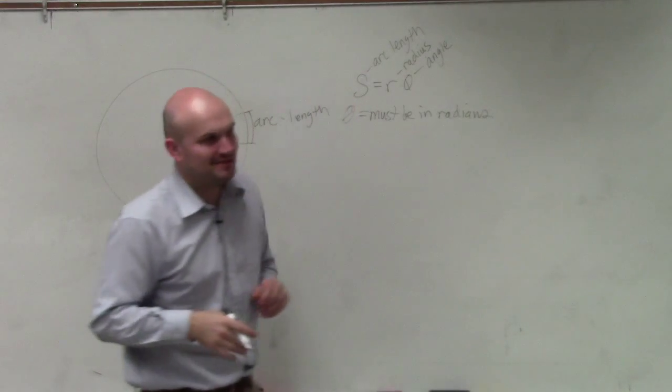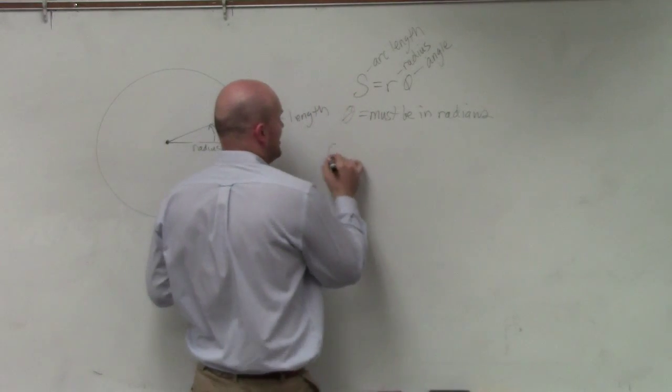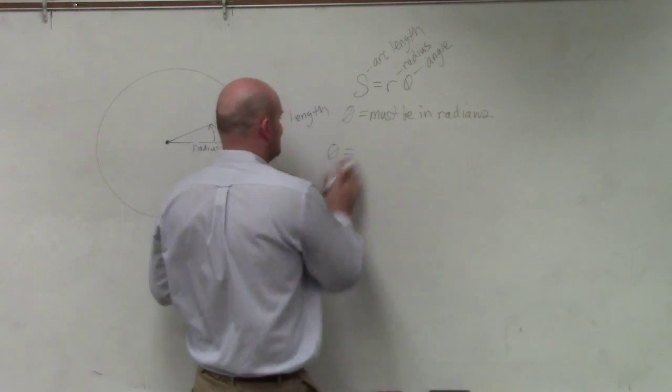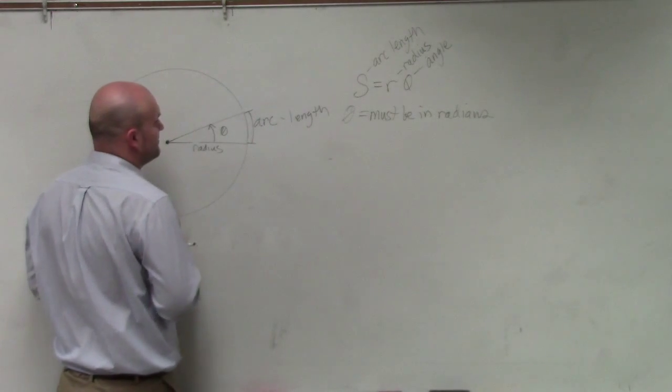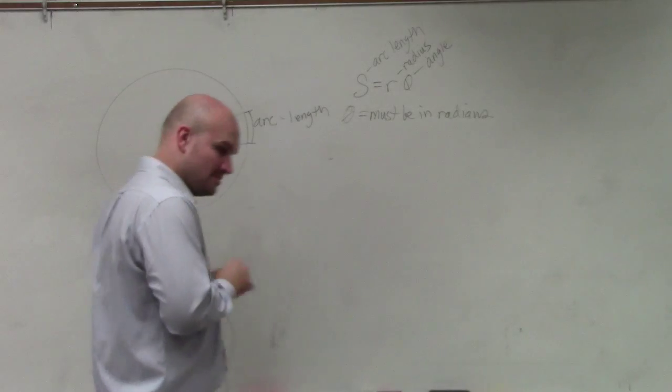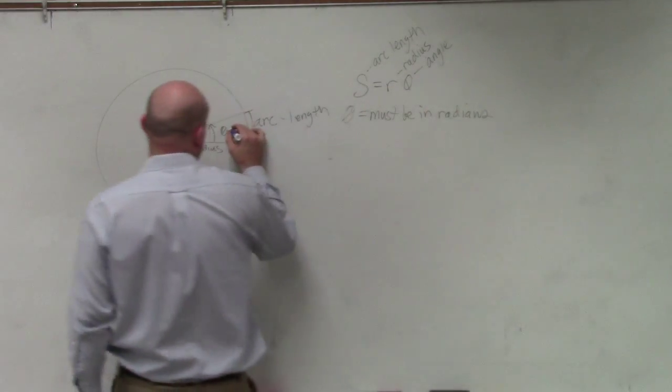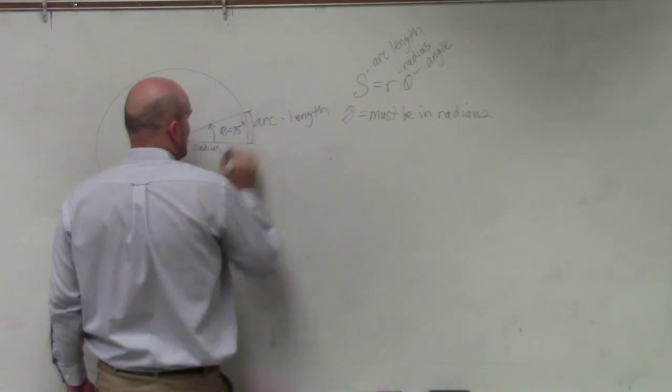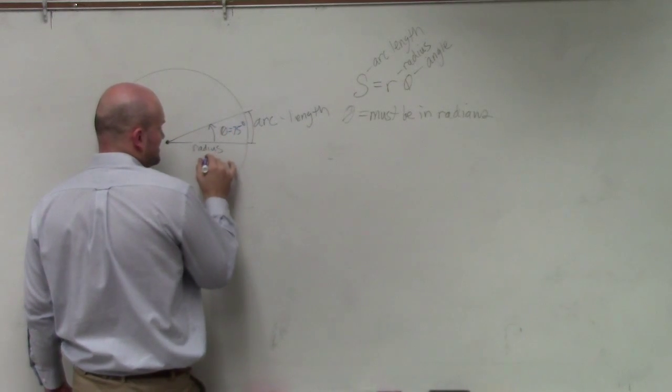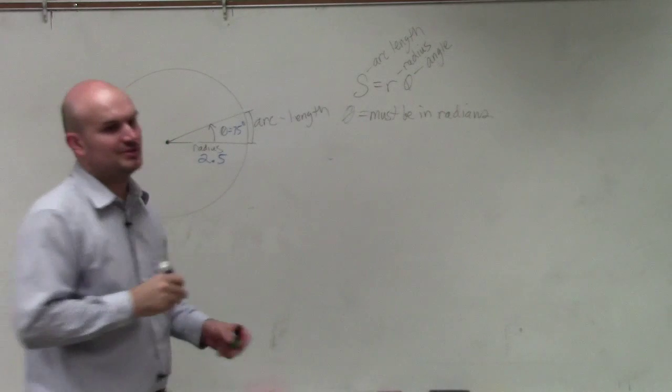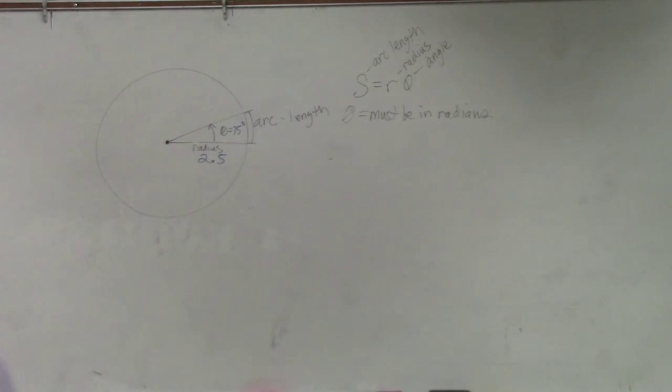So to be the mean math teacher, why don't you guys go ahead, and if I said, why don't you guys go ahead and find the arc length if theta is 75 degrees and my radius is 2.5? Why don't you guys see if you guys can use that formula to figure that out.